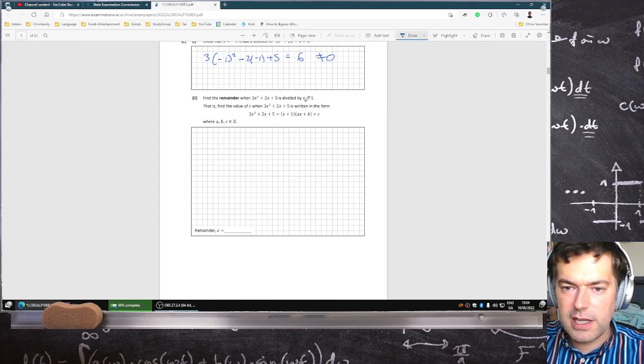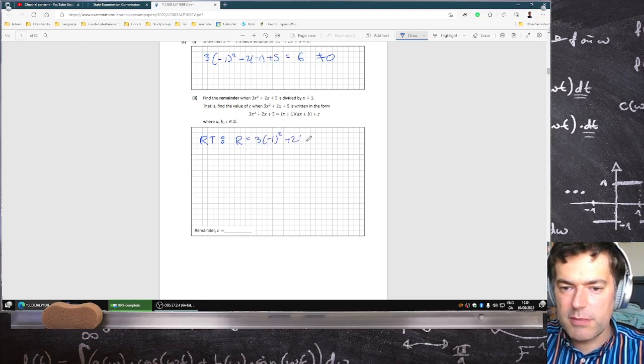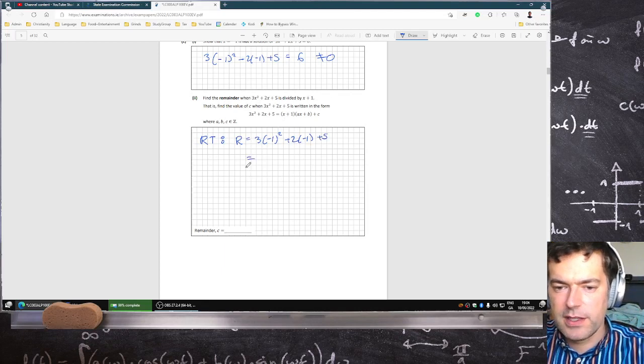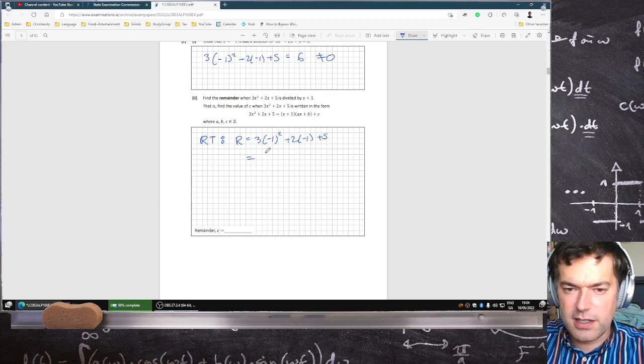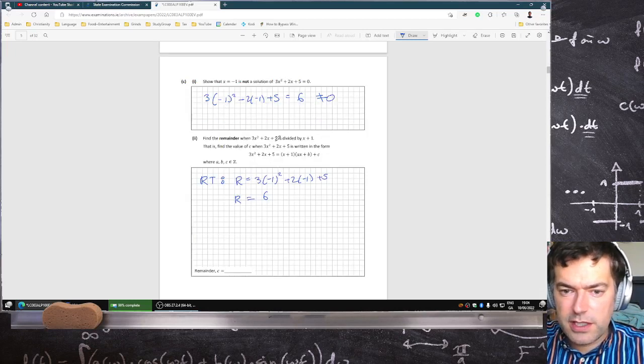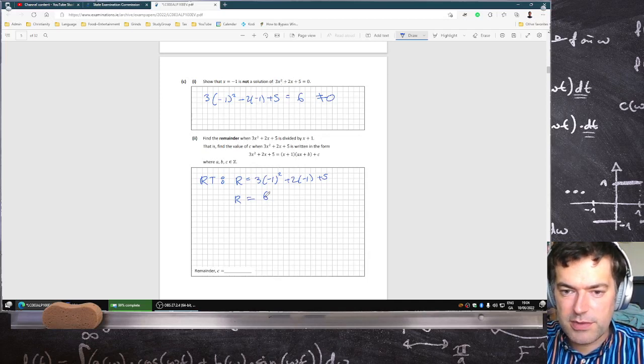Find the remainder when that's divided by x plus 1. Well, using the remainder theorem, the remainder would just be, you sub in minus 1. So it's 3 times minus 1 squared plus 2 times minus 1 plus 5. That's going to be 3 minus 2, why am I taking out the card there? I'm tired, I guess. 6. That's the remainder. Oh, is that what they had me do? That's funny. That's what I literally just did. I knew it was 6 because that's what I got last time. I wonder if they did that on purpose.